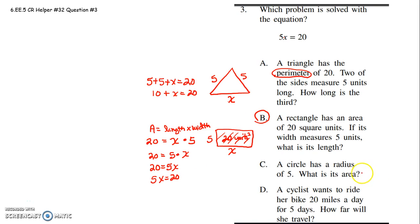Let's see what letter C would be. A cyclist - oh, a circle. Sorry, my eye skipped down to the next part. A circle has a radius of 5. So I'm just giving you a picture. A radius of 5. What is the area?